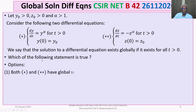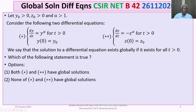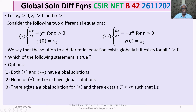The options are: Option 1 — both (*) and (**) have global solutions. Option 2 — neither (*) nor (**) have global solutions. Option 3 — there exists a global solution for (*). Option 4 — there exists a global solution for (*) and there exists a finite capital T such that the limit as t tends to T of |z(t)| equals plus infinity.